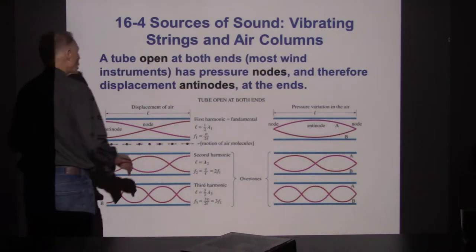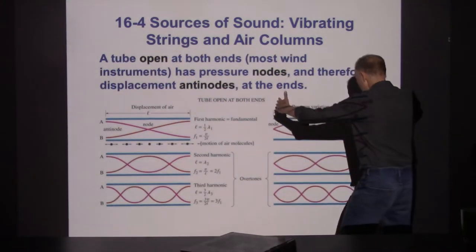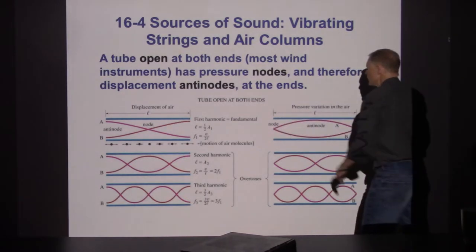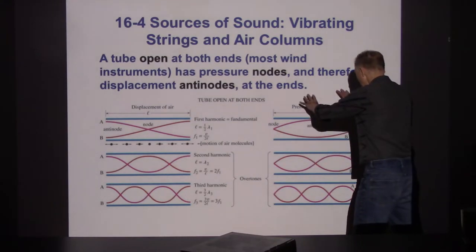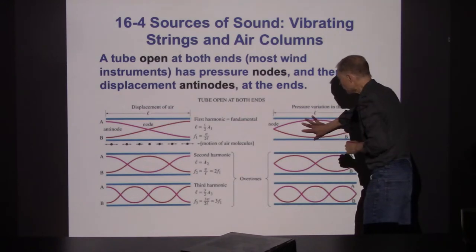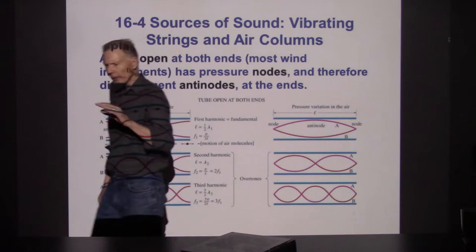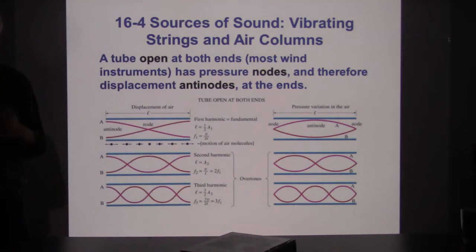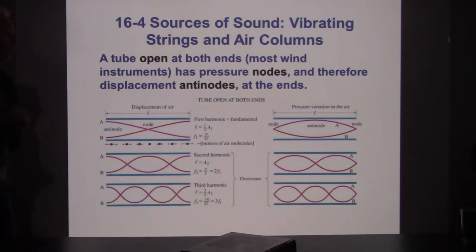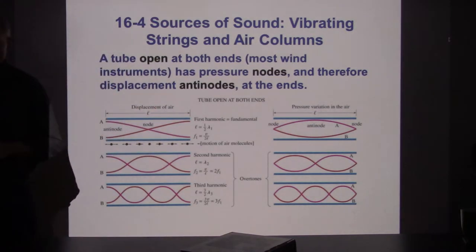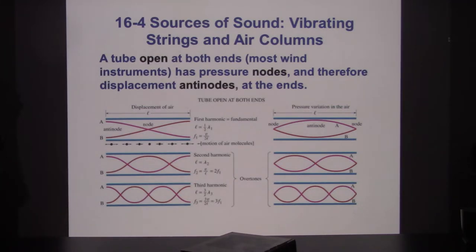Looking at the pressure variation inside the tube: we've got a compression in the middle and no compressions at the ends. For the first harmonic there's a compression in the middle, two compressions for the second harmonic, three for the third, and so on. The mathematics works the same way — for a tube open at both ends, the pattern of wavelengths follows 2L divided by N, where N is an integer.